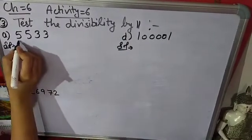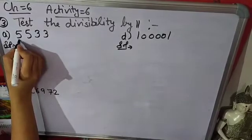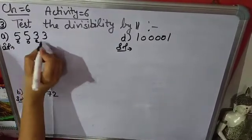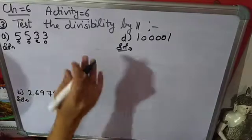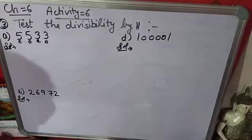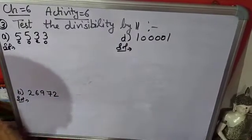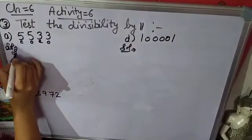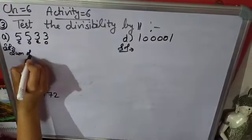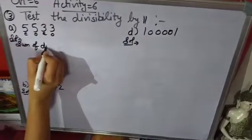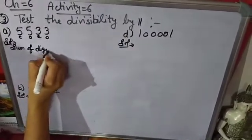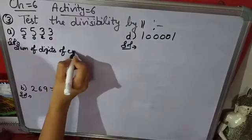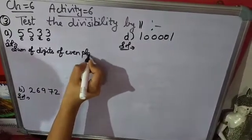You have to label each digit position serially as even, odd, even, odd, even, odd. Then write the sum of digits at even places.